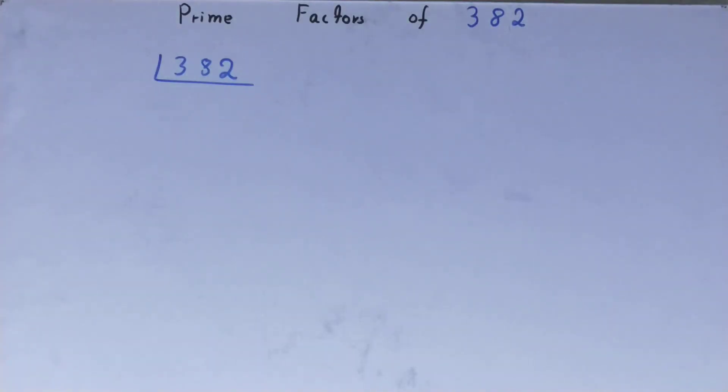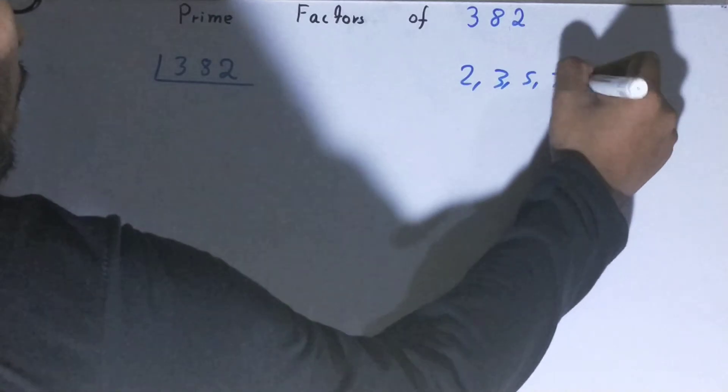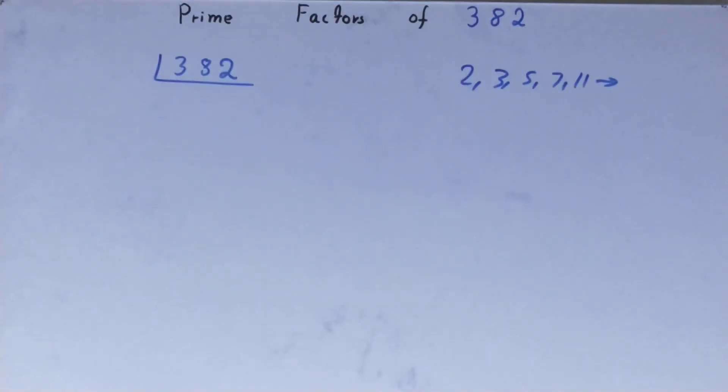Prime numbers are numbers that are divisible by 1 and the number itself, like 2, 3, 5, 7, 11, and so on.